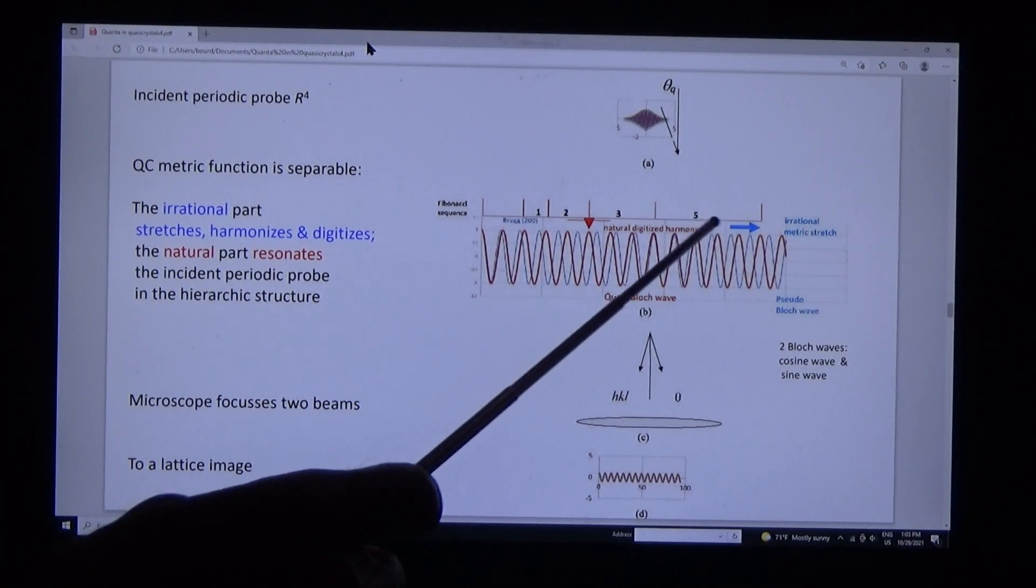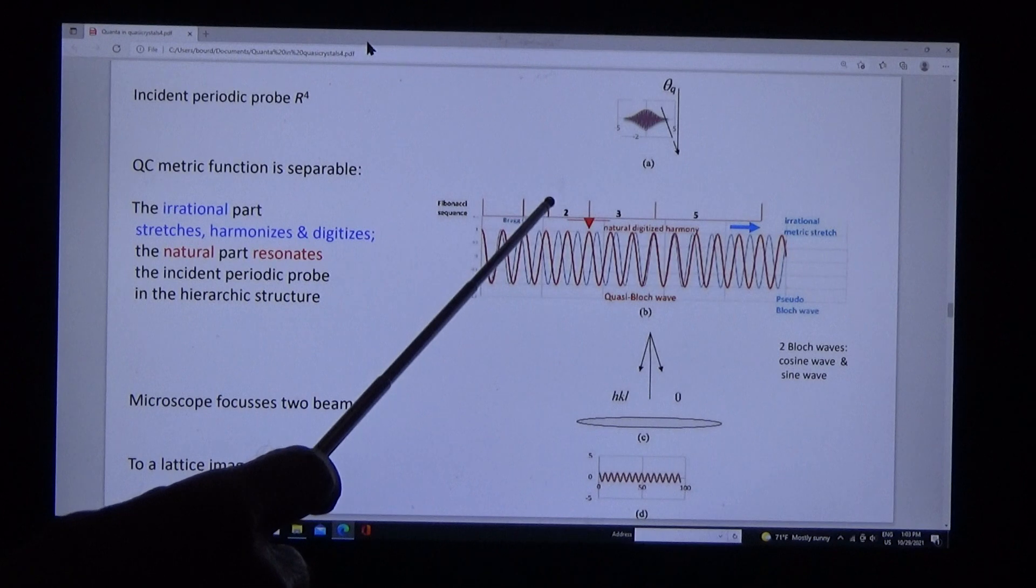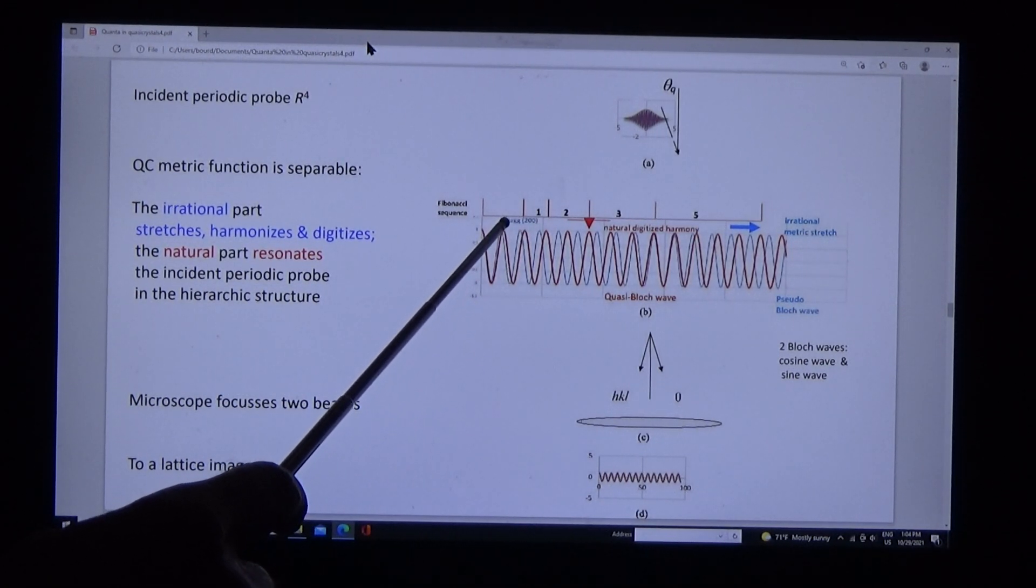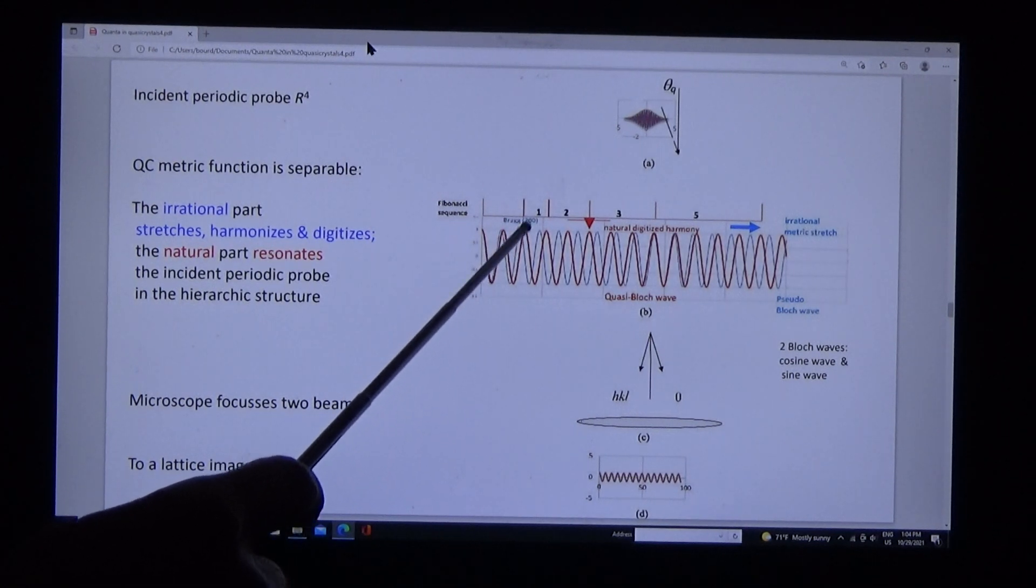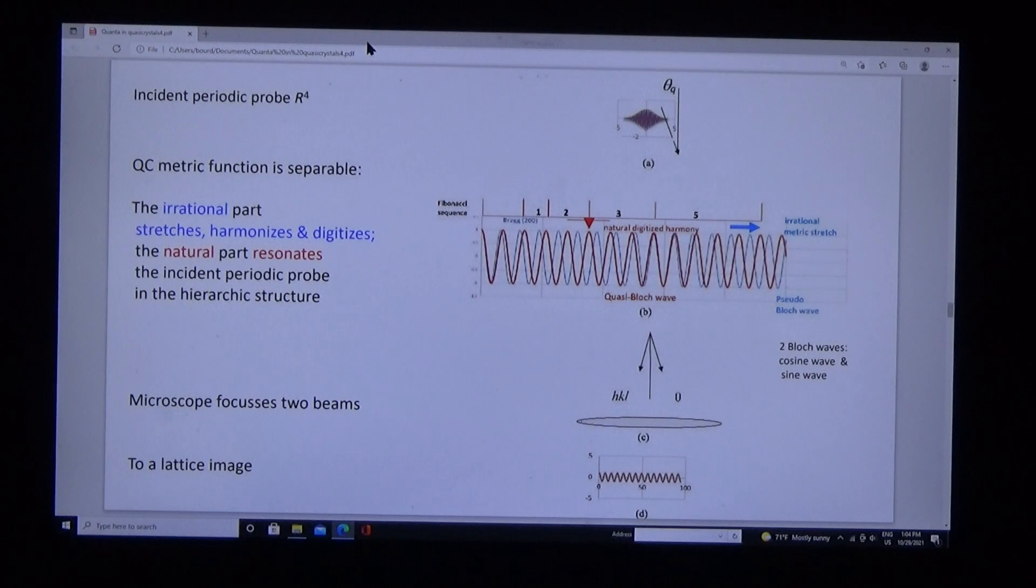But these Bloch waves are incoherent with the red intercepts in the hierarchic structure. However, if we take the blue wave and stretch it by the metric function we just derived, the red wave is coherent with the geometric structure.